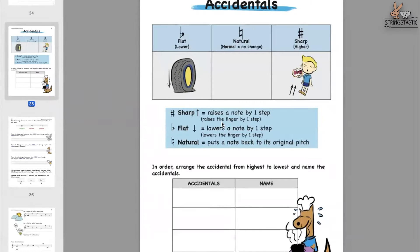The way I explain accidentals is this: sharp, flat, natural. When you have a flat tire, what happens — does it go down lower or float up in the sky? It goes down lower, which means flat is lower. When you have a sharp sign, what happens when you get pricked by something sharp? You kind of jump up — it's like fright, something sharp is poking you. Hence the sharp is higher. Natural means no change, or normal, so that's in the middle. It's a neutral point between flats and sharps.